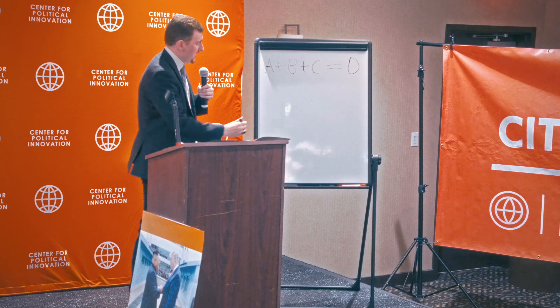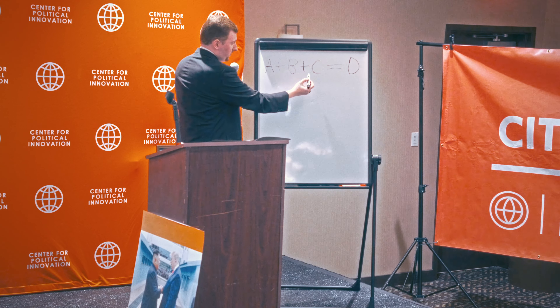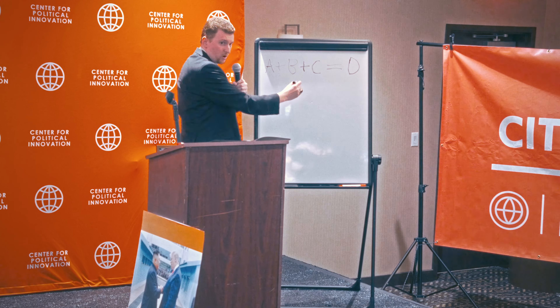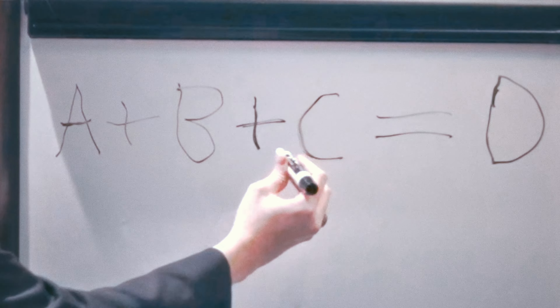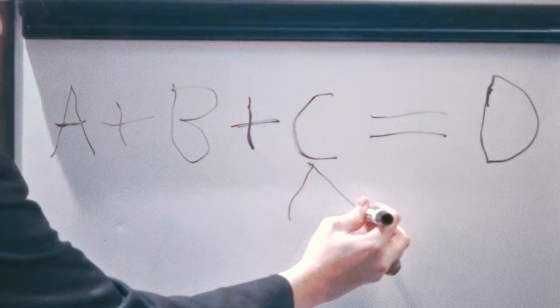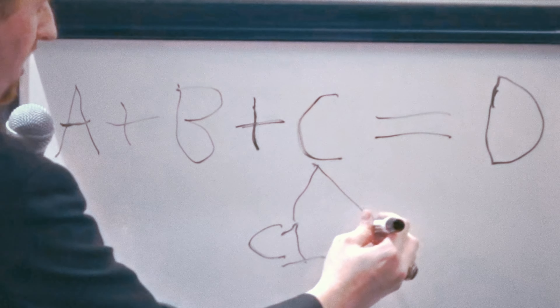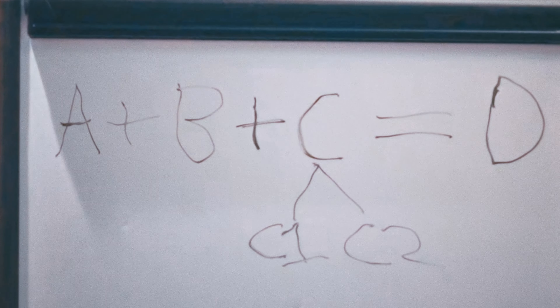The capitalist can't change how much A costs. He can't change how much B costs. So the profit of the capitalist can only be extracted from the value put into it by the worker. And this is the basis of Marxism — the understanding of surplus value. So C, the labor value, is divided. You have C1, which is what the worker actually gets paid. And then you have C2, which is the profit that the capitalist makes. And it all adds up to D, which is the final cost of the product.